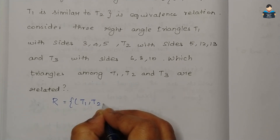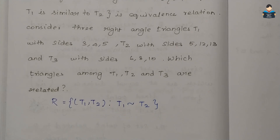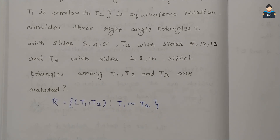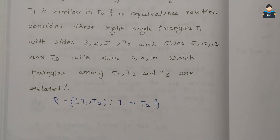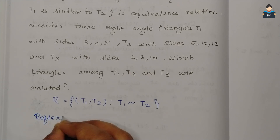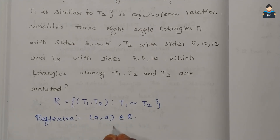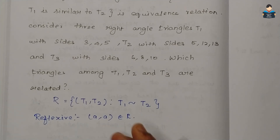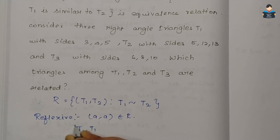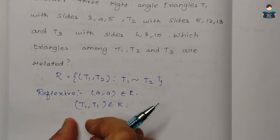We will explain the relation R = {(T1, T2) such that T1 is similar to T2}. We start at the level where T1 belongs to R, considering all triangles, where T1 is the same triangle.